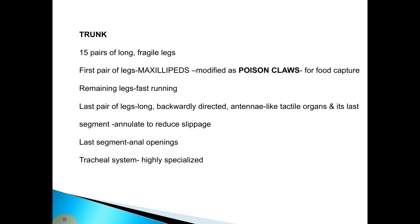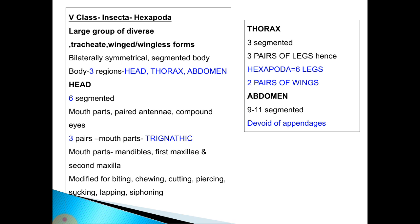The trunk consists of 15 pairs of long, fragile legs. The first pair, called maxillipeds, is modified as poison claws for prey capture. The remaining legs are used for fast running. The last pair of legs is long and backwardly directed, serving as antler-like tactile organs. Large segments contain annulations to reduce slippage. The last segment contains the anal openings and the tracheal system is highly specialized.